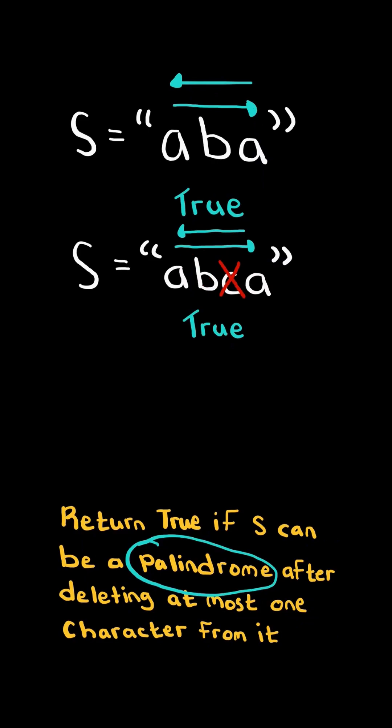Note, we could have chosen to delete c instead of b and it still would have been a palindrome. And finally, consider this example. There is no character we could delete to make the string a palindrome, so we return false.